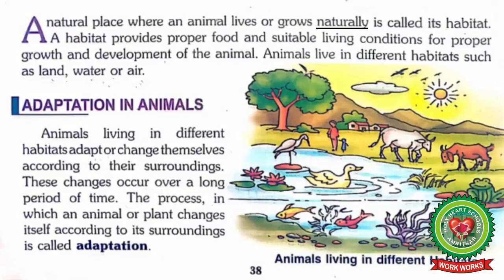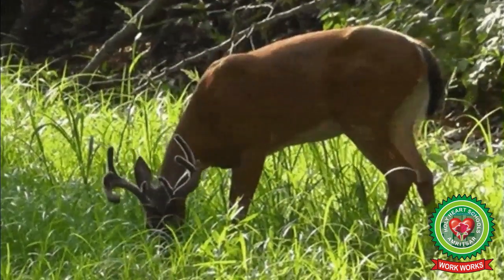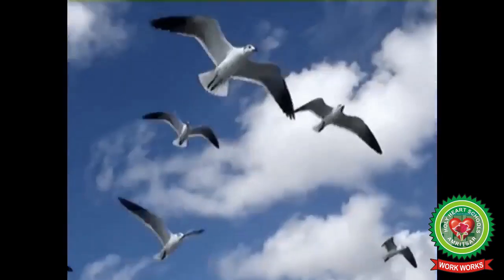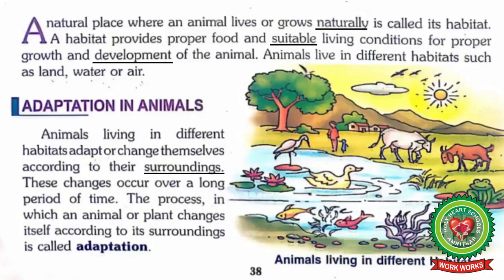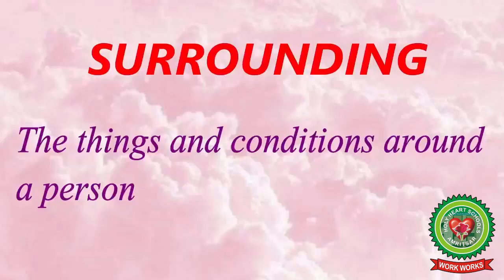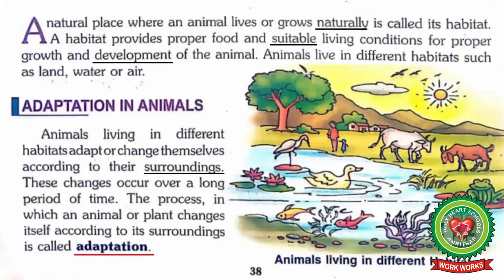A habitat provides proper food and suitable conditions so organisms can grow and develop properly. Animals live in different habitats — some live on land, some in water, and some in air. Animals living in different habitats adapt or change themselves according to their surroundings. Underline the word 'surroundings' and write down its meaning: the things and conditions around a person.